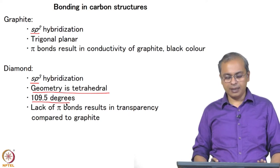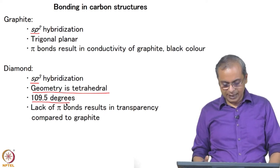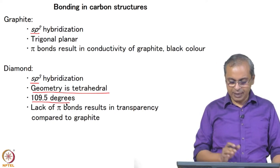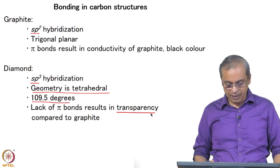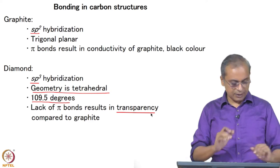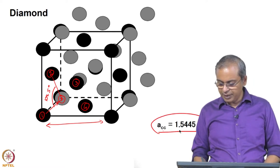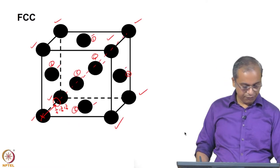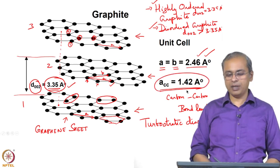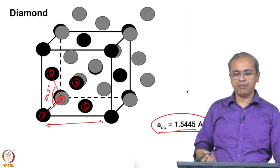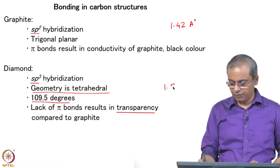In diamond all bonds are covalent with no pi bonds. In terms of band structure, this results in a significant band gap, meaning diamond is transparent, whereas graphite is black. So to summarize the comparison: the carbon-carbon bond length in graphite is 1.42 angstroms, and in diamond it is 1.54 angstroms.